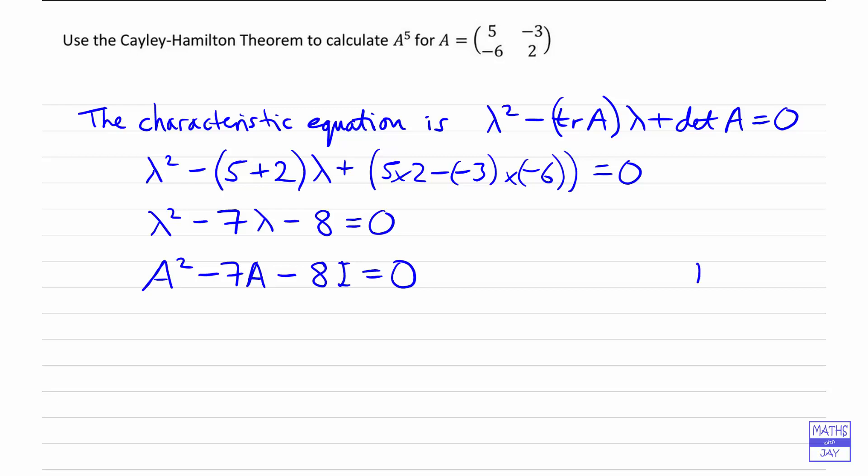Some of you may write the identity matrix with a little 2, because we've got a 2 by 2 matrix. So that is what we're going to be using here. It's easier to use if we make A² the subject, so the matrix A² is 7A + 8I, simply adding 7A and 8I to both sides.